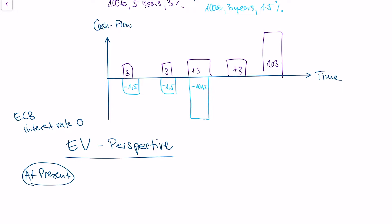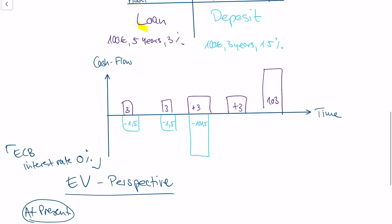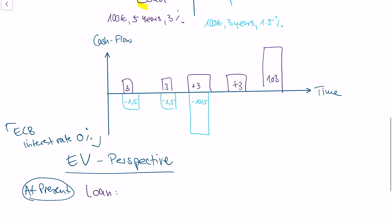In this simple example, we assume that the European Central Bank sets an interest rate of 0%. That means we can actually value our loan quite simply by just adding the cash flows. So our loan is 3 plus 3 plus 3 plus 3 plus 3 plus 103, which equals 115.